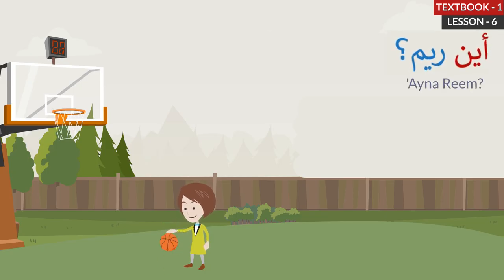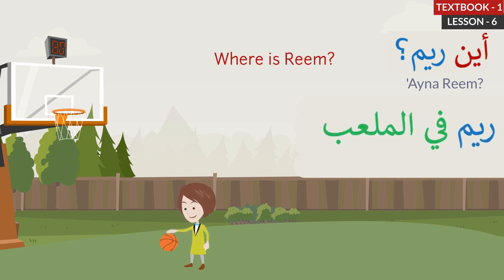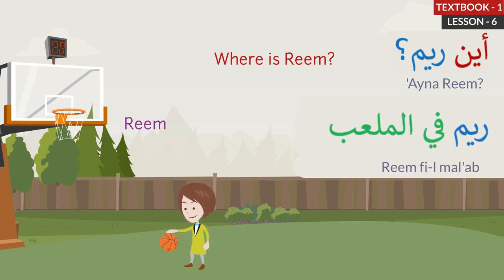The next one. Aina Reem? Where is Reem? The answer is: Reem Philmalab. Reem is in the playground. Let's repeat: Aina Reem? Where is Reem? Reem Philmalab. Reem is in the playground.